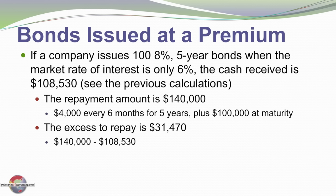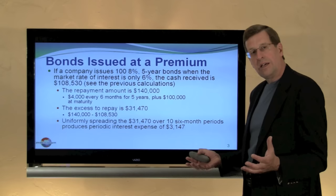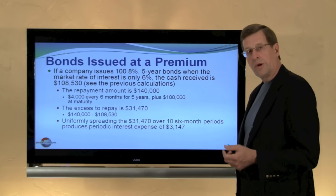We borrowed $108,530 — the price we received for the bonds — and repay over time a total of $140,000, a difference of $31,470. If we spread that difference over the ten six-month periods, $31,470 divided by ten is $3,147. So the total cost of borrowing, the difference between cash in and cash out, assigns interest expense of $3,147 each period under the straight-line approach.